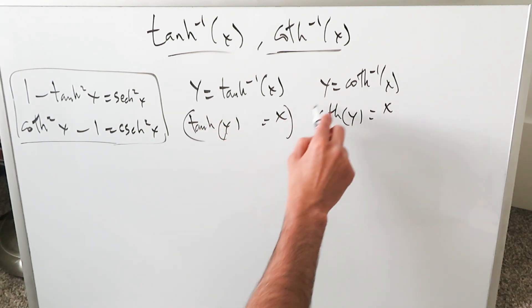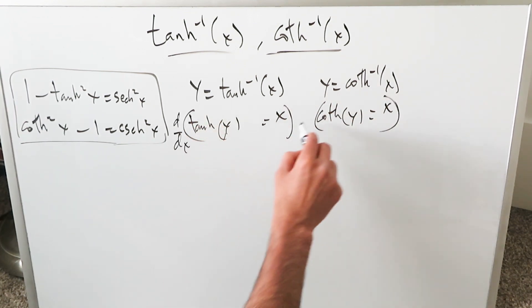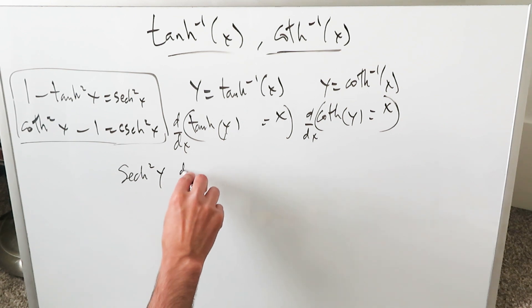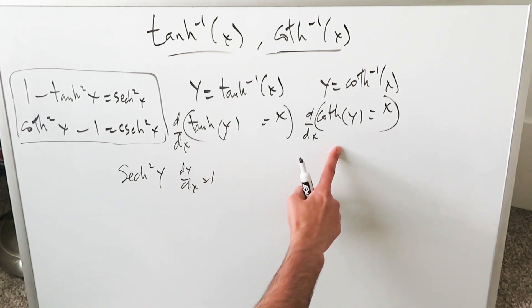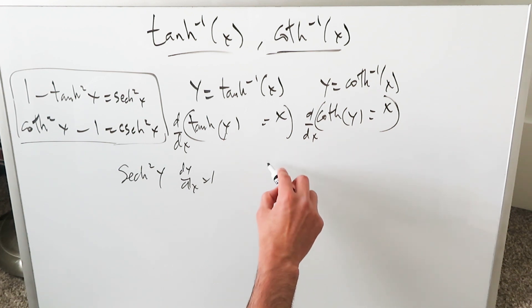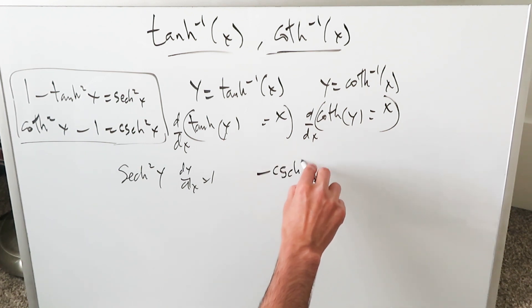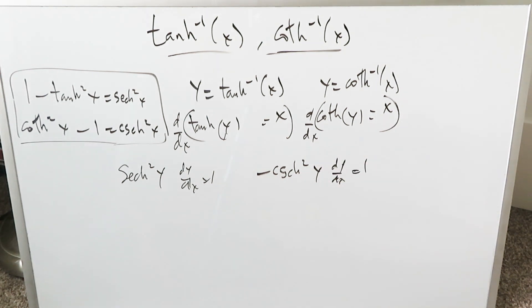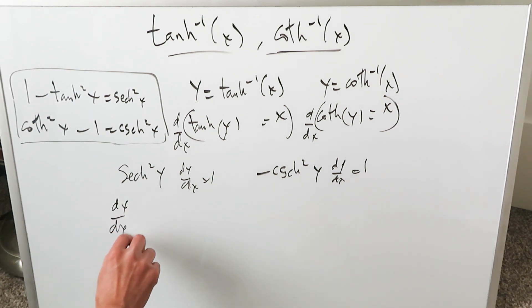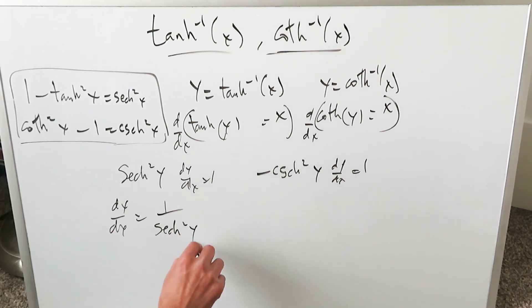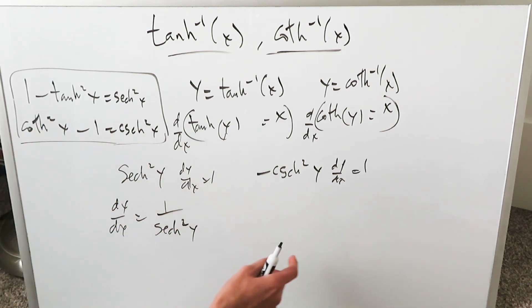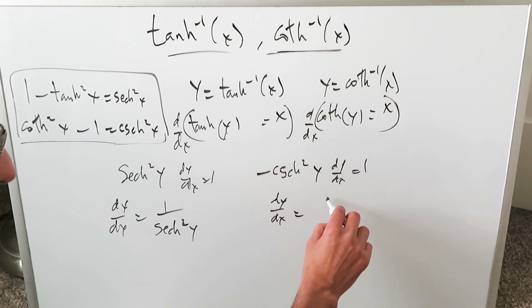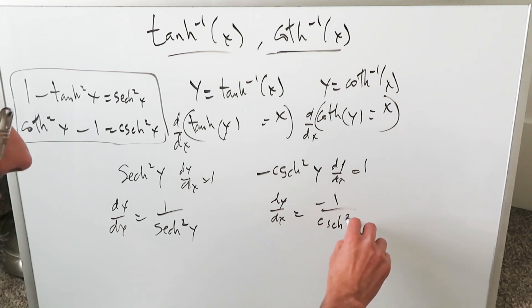You do the implicit differentiation — the derivative of this entire expression. When you do the derivative of x = tanh(y), you have hyperbolic secant squared y times dy/dx equals 1. Over here, doing the derivative of x = coth(y), you get minus hyperbolic cosecant squared y times dy/dx equals 1. You solve for dy/dx in each case: dy/dx equals 1 divided by hyperbolic secant squared y, and dy/dx equals minus 1 divided by hyperbolic cosecant squared y.